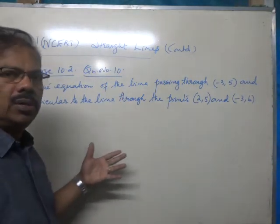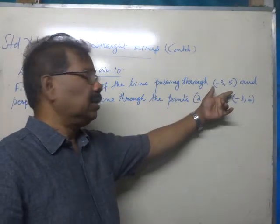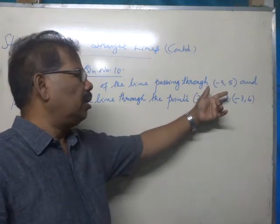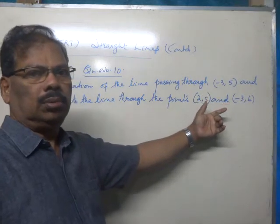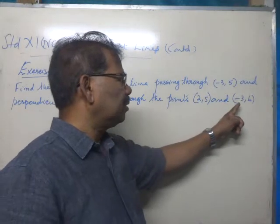In this question, we are asked to find the equation of a line. It passes through (-3, 5) and is perpendicular to the line passing through the points (2, 5) and (-3, 6).